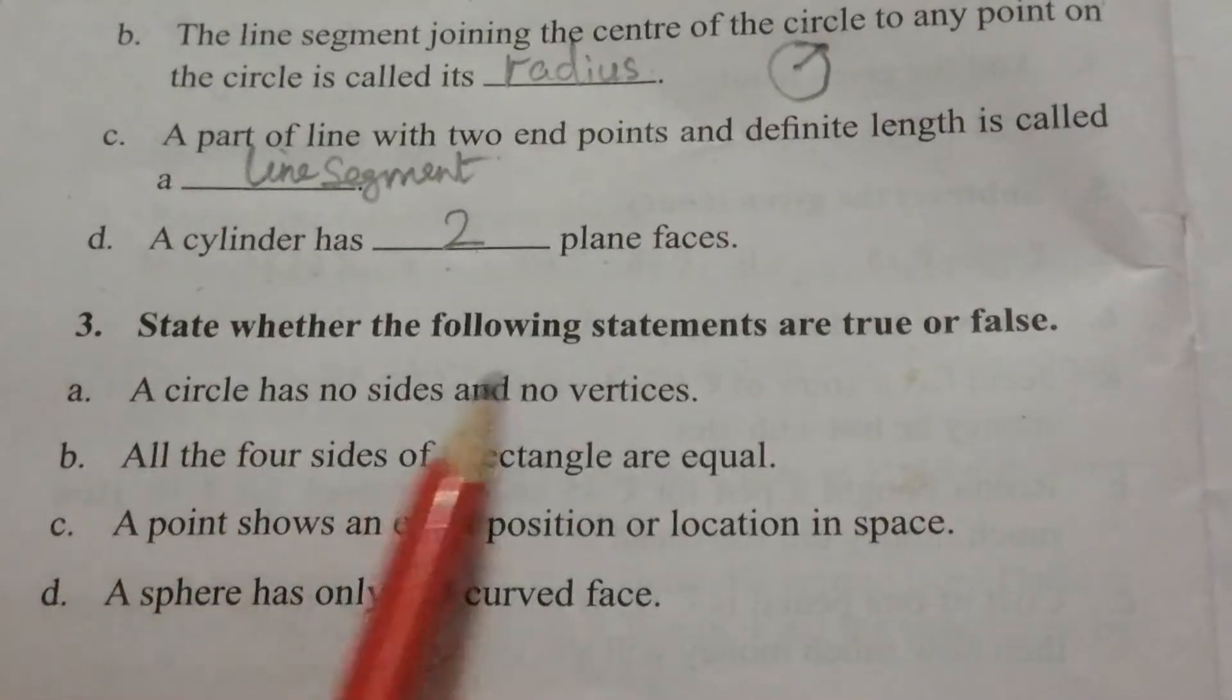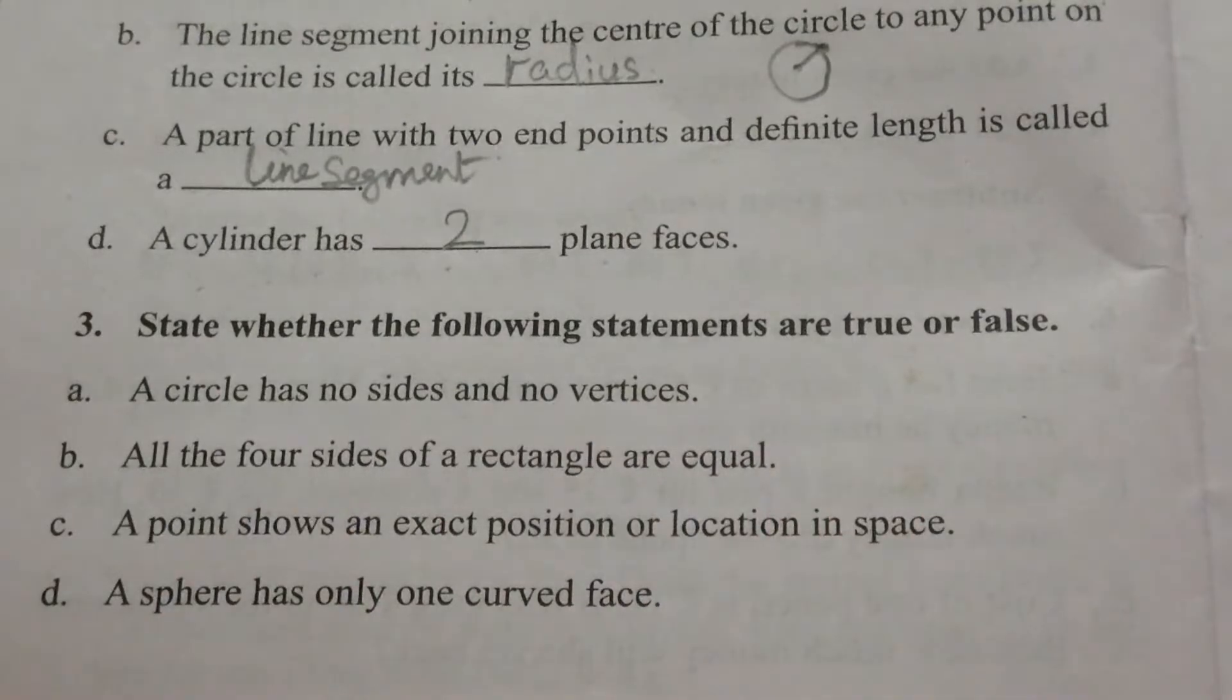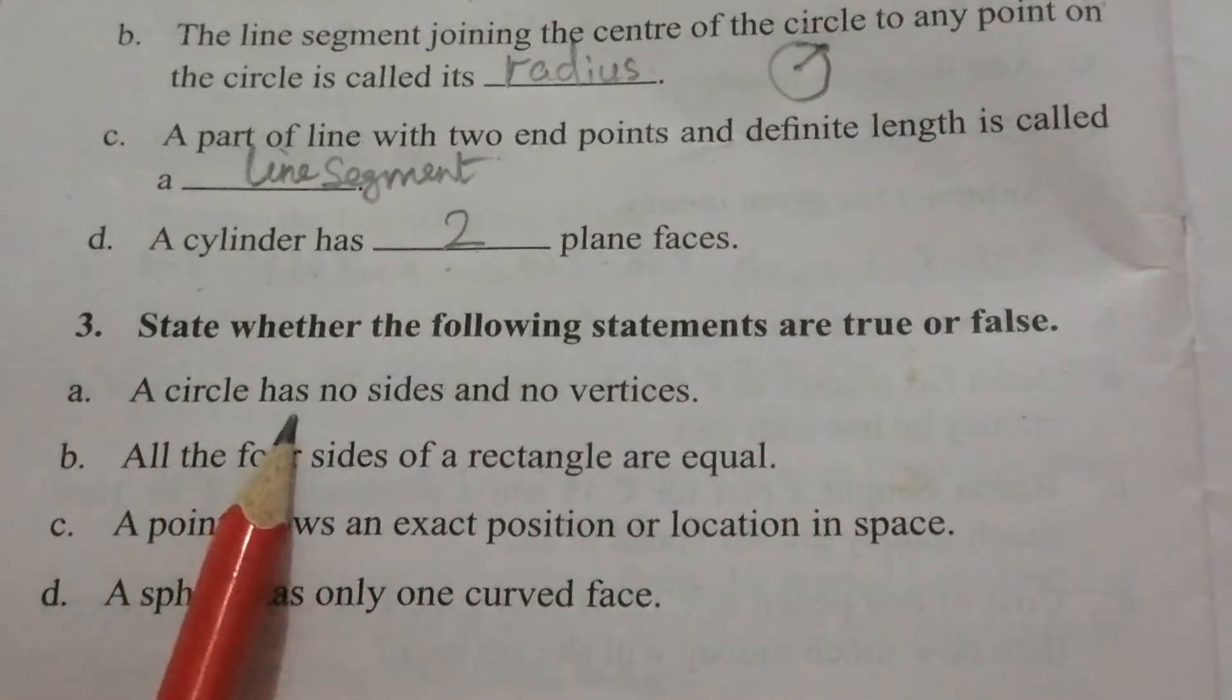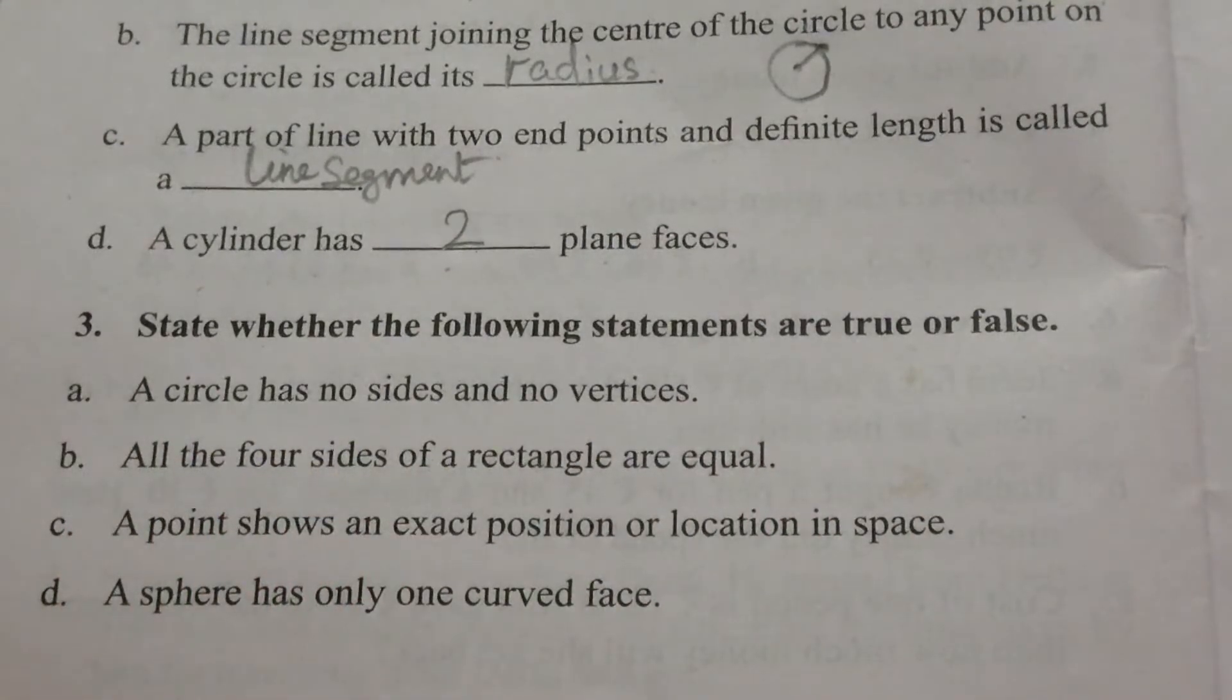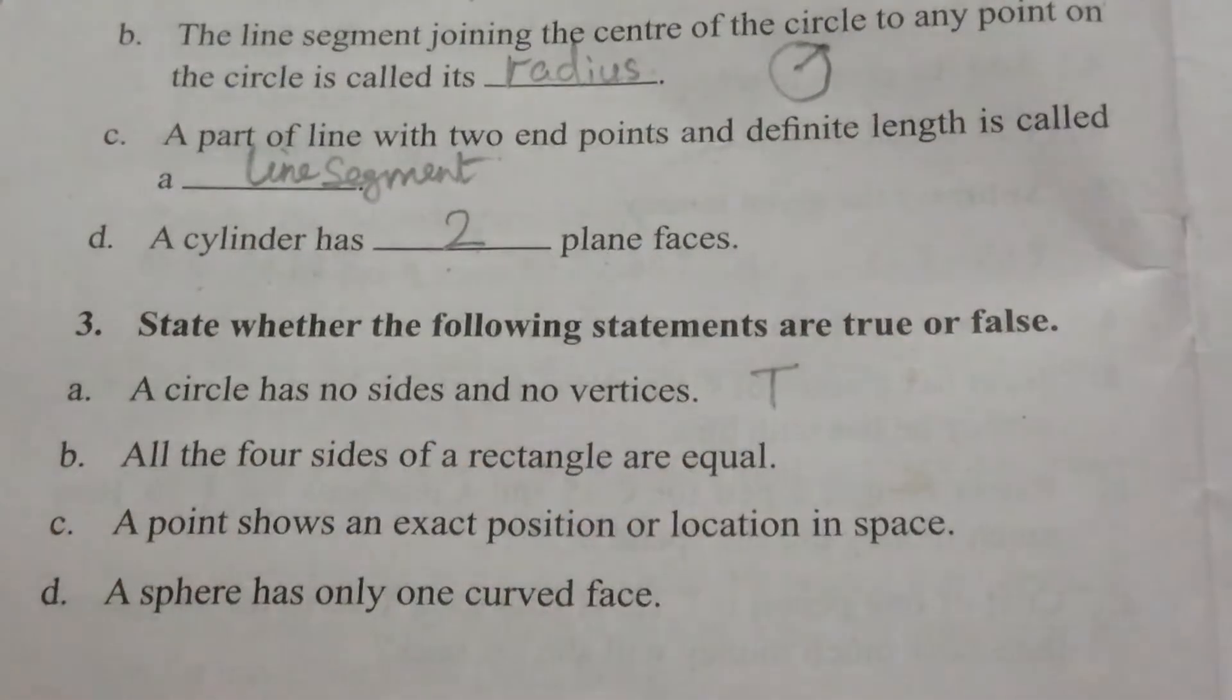3. State whether the following statements are true or false. A. A circle has no sides and no vertices. It is a true statement.